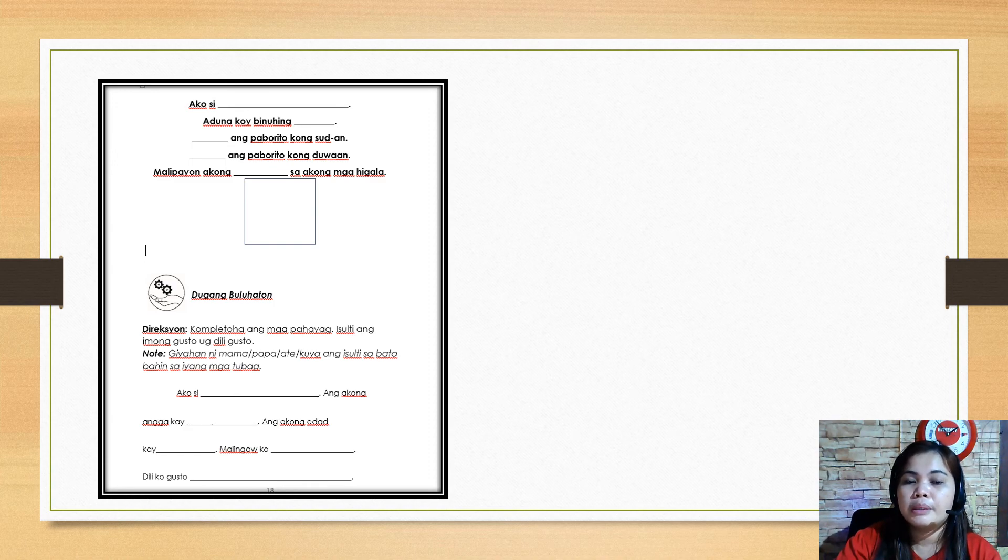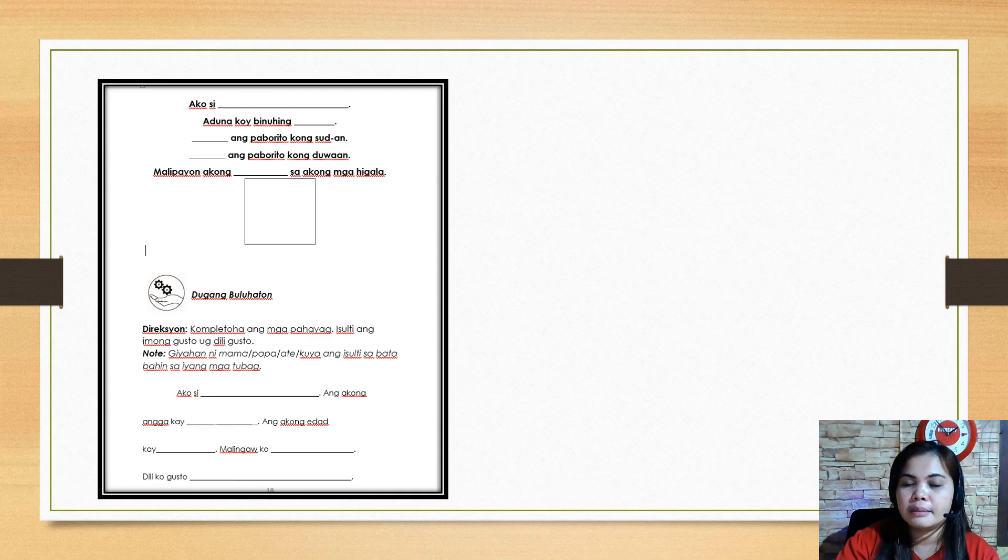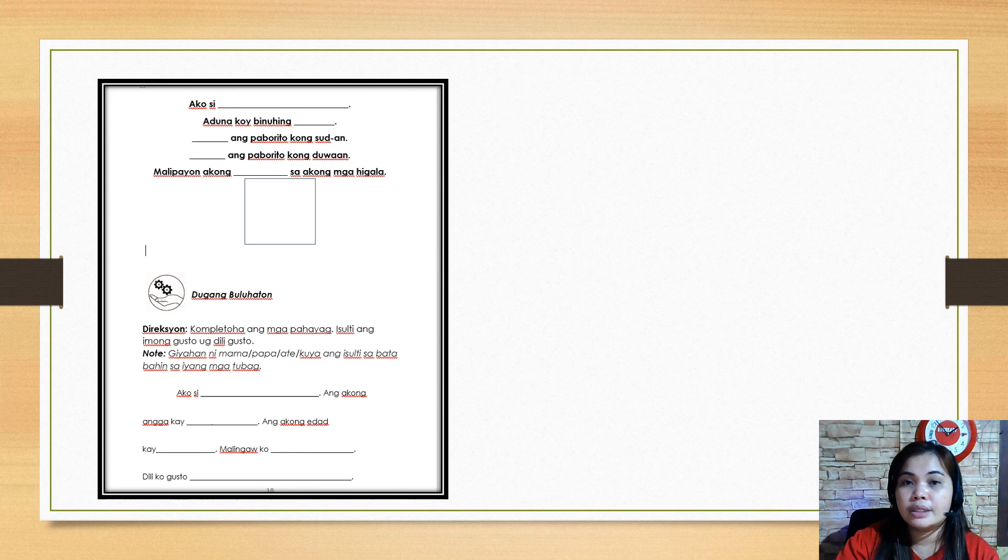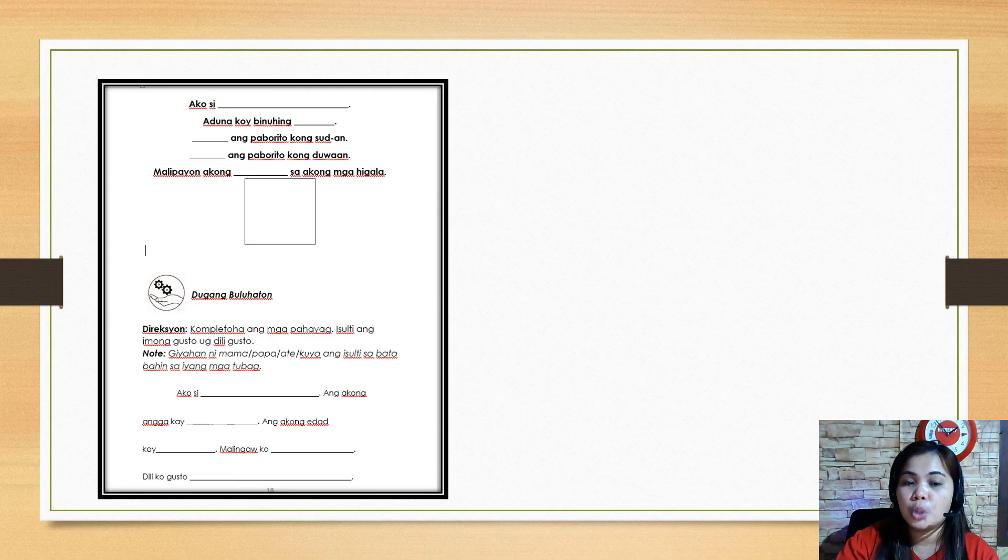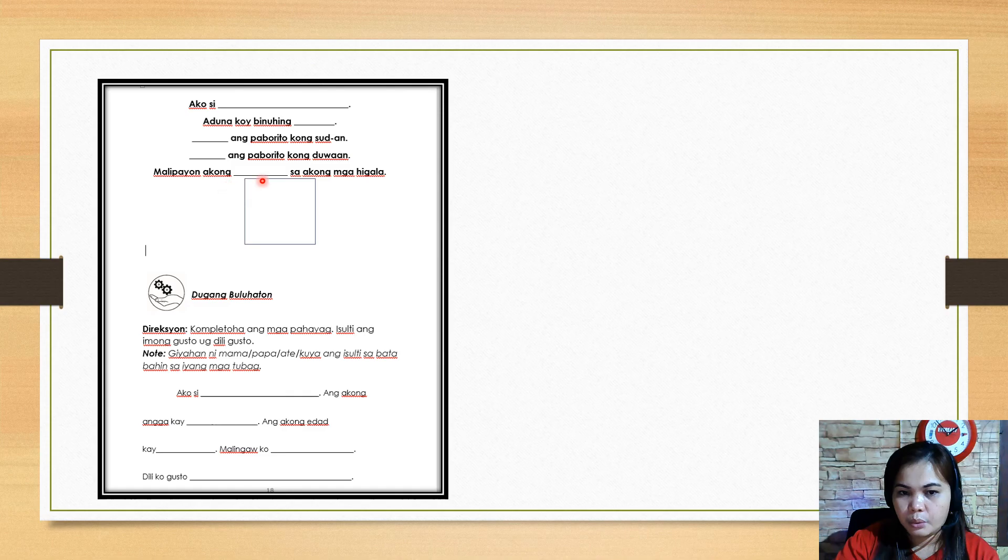I have a pet. What is the name or what kind of pet do you have? Next: ang paborito kong sudan. For example, vegetables is my favorite food. Next: ang paborito kong duwaan. Doll is my favorite toy. Next: malipayon akong - I am happy. Playing with my friends.